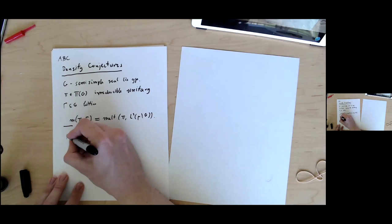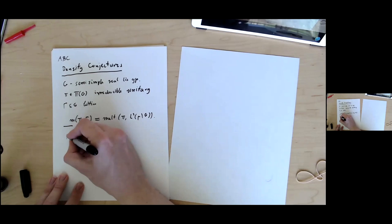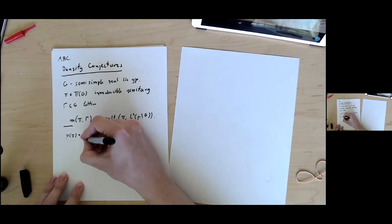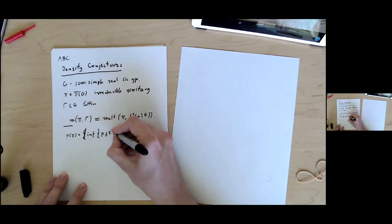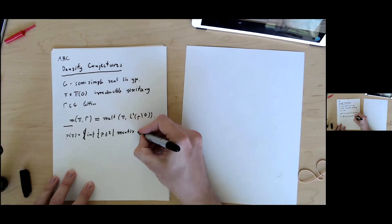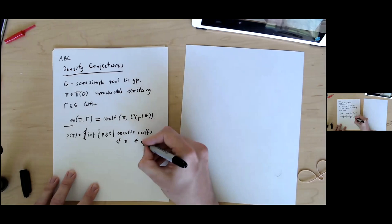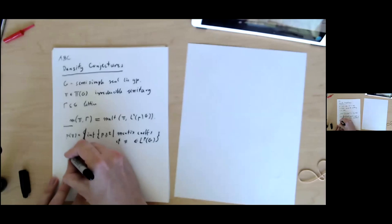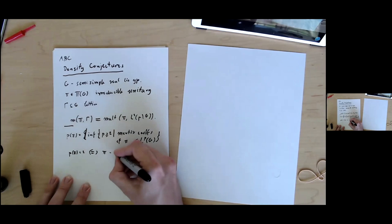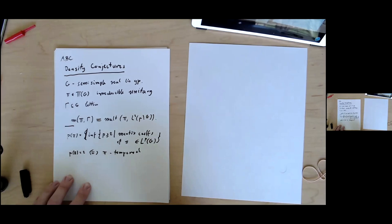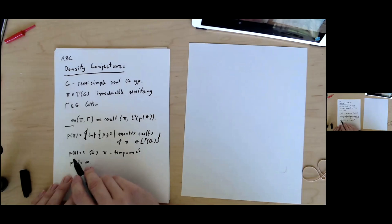Density conjectures are specific estimates on those multiplicities that really kick in when pi is non-temperate representation. Let me define some parameters that measure the non-temperateness. We'll write p pi as the infimum of real parameters p at least two such that matrix coefficients pi are in Lp of G. In that way, p pi is two if and only if pi is tempered, and the opposite case p pi is infinity.